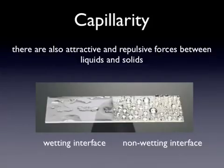So surface tension talks about the liquid-air interface. There's also an interaction between liquids and solids. If you look at the figure there, on the left is glass treated so that there's an attraction between the water and the solid. And you can see the water kind of sheets across it and spreads quite nicely. That's called a wetting interface.